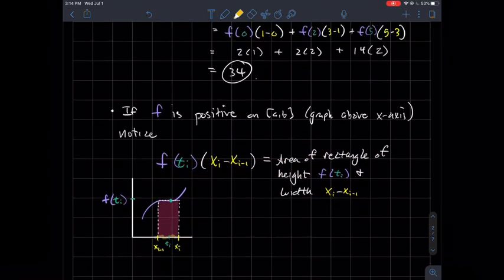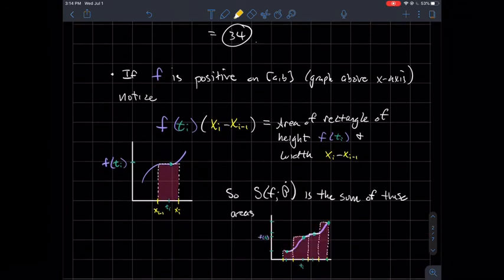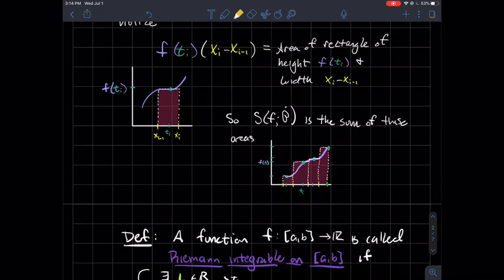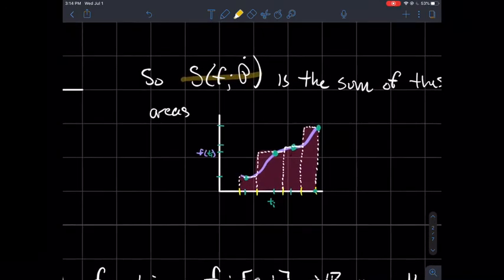So in my case above, I have three rectangles. I'm about to draw you a random picture down here where I have some new function that looks like it has four rectangles. And so the Riemann sum for that function with those tags that I picked would again compute that shaded area.